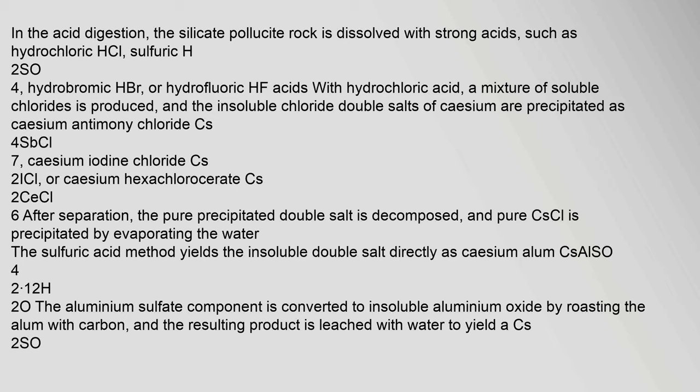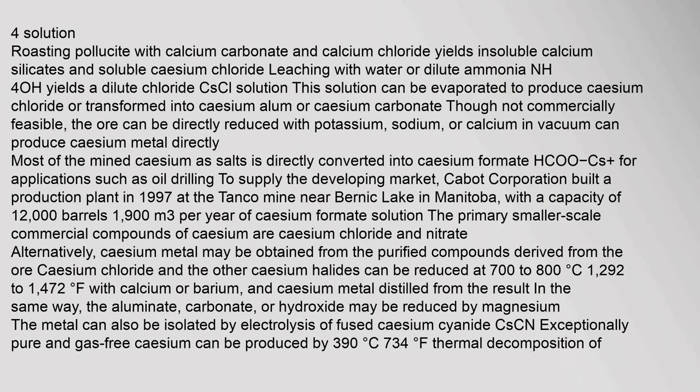In acid digestion, the silicate pollucite rock is dissolved with strong acids such as hydrochloric (HCl), sulfuric (H₂SO₄), hydrobromic (HBr), or hydrofluoric (HF) acids. With hydrochloric acid, a mixture of soluble chlorides is produced and the insoluble chloride double salts of caesium are precipitated. After separation, the pure precipitated double salt is decomposed and pure caesium chloride is obtained by evaporating the water. The sulfuric acid method yields the insoluble double salt directly as caesium alum (CsAl(SO₄)₂·12H₂O).